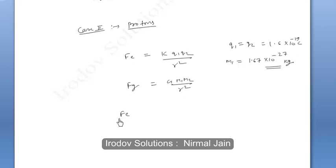Here if we take the ratio of Fe by Fg, then we get the same thing, 9 times 10 to the power 9 times 1.6 times 10 to the power minus 19 Coulomb square.